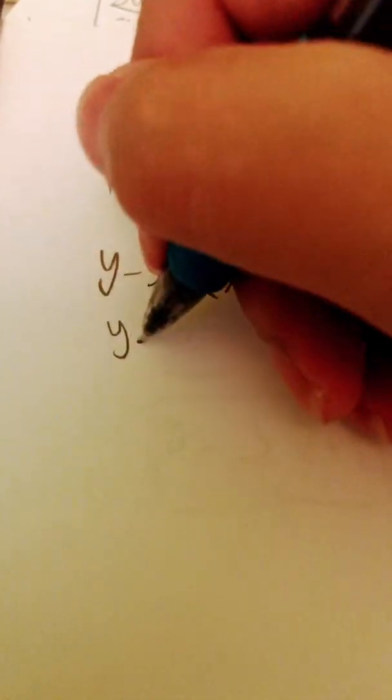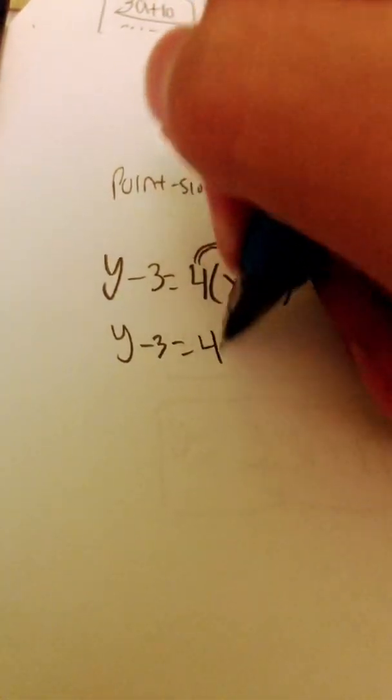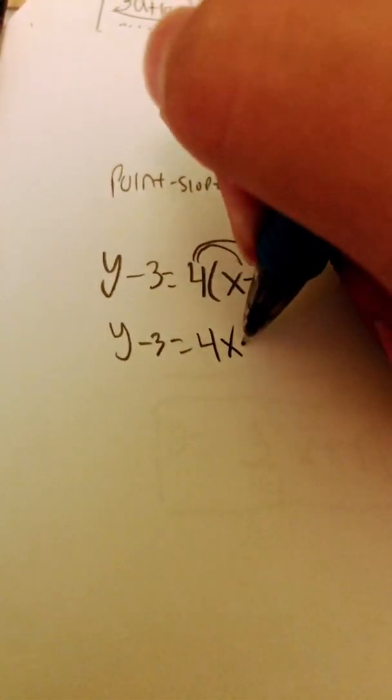So I'm going to have y minus 3 equals 4 times x is 4x, and then 4 times negative 3 is negative 12.